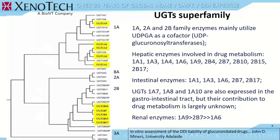The UDP glucuronosyl transferase superfamily is phylogenetically divided into families 1A, 8A, 2A, 2B, and 3A. Genes for drug-metabolizing enzymes are in families 1A and 2B. Major drug-metabolizing enzymes are marked in yellow on the phylogenetic tree on the left. The 1A, 2B, and 2A family enzymes mainly utilize UDPGA as a cofactor, hence their name.